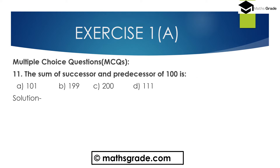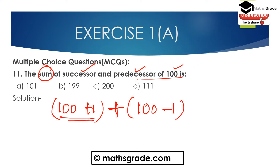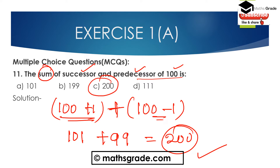Now question number 11, a multiple choice question: What is the sum of the successor and predecessor of 100? The options are 101, 199, 200, and 111. The successor of 100 is 100 + 1 = 101, and the predecessor of 100 is 100 − 1 = 99. So 101 + 99 = 200. Option C, that is 200, is the correct answer.